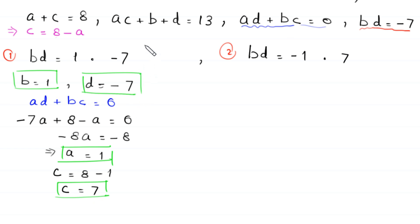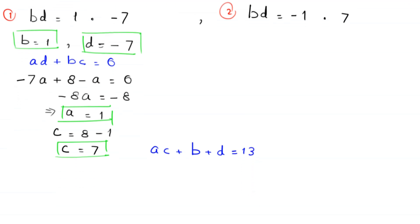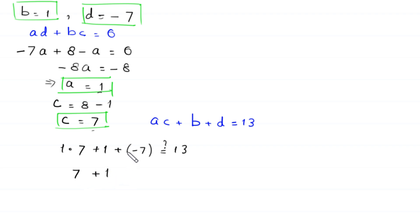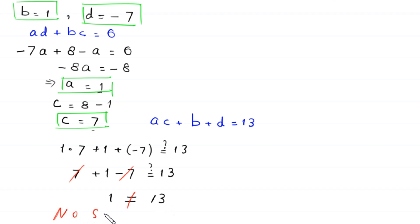Now we check these values in the equation ac plus b plus d equals 13. With a equals 1 and c equals 7, ac equals 1 times 7 equals 7. Then 7 plus b, which is 1, plus d, which is negative 7, gives 7 plus 1 minus 7 equals 1. But 1 is not equal to 13. This means no solution can be found from Case 1.